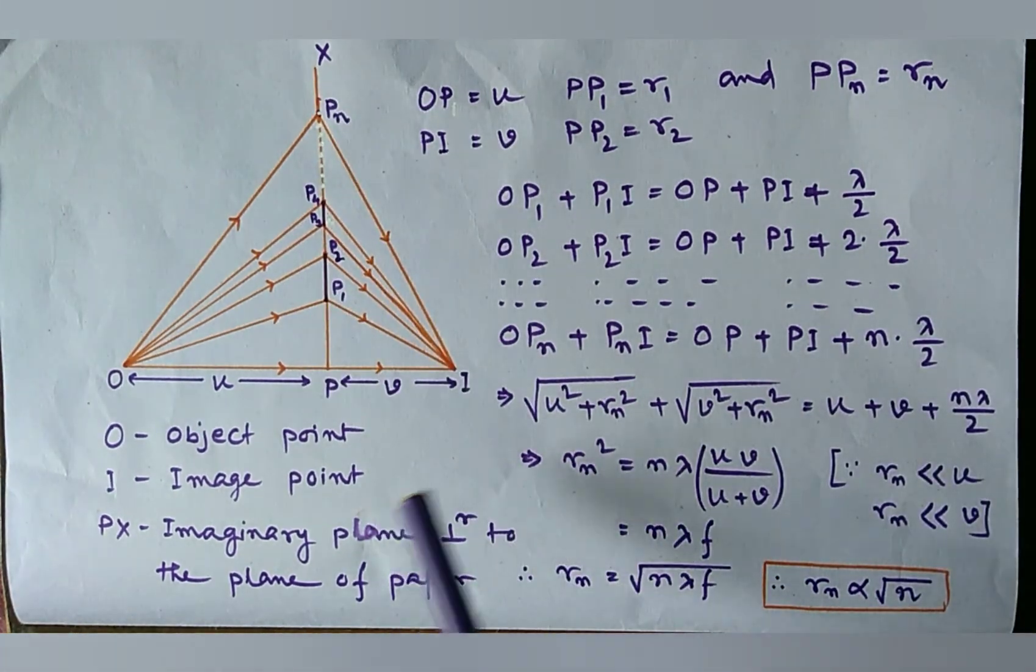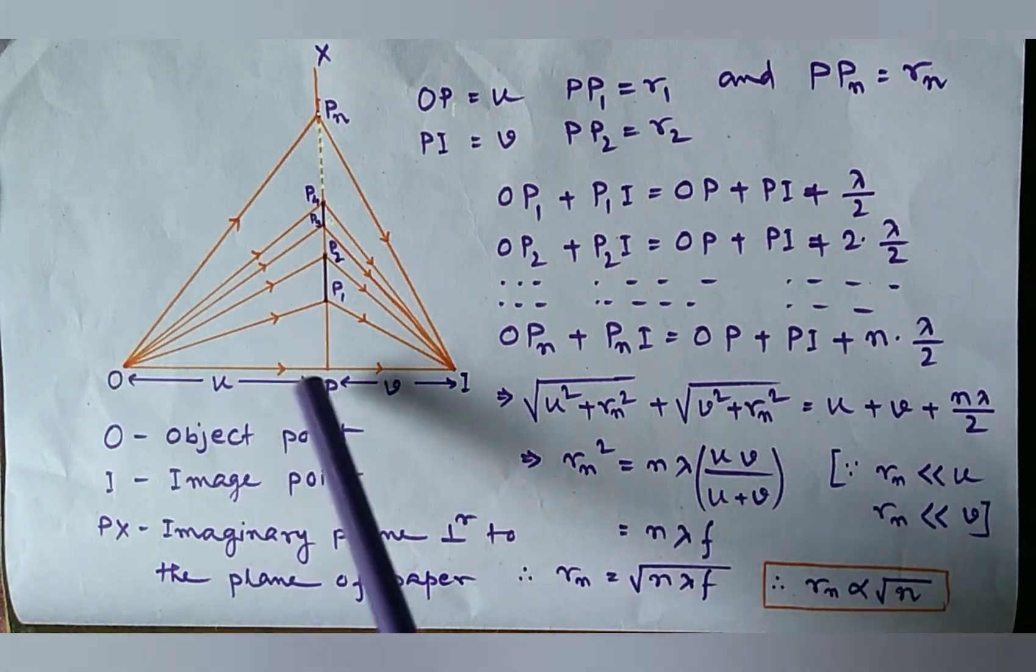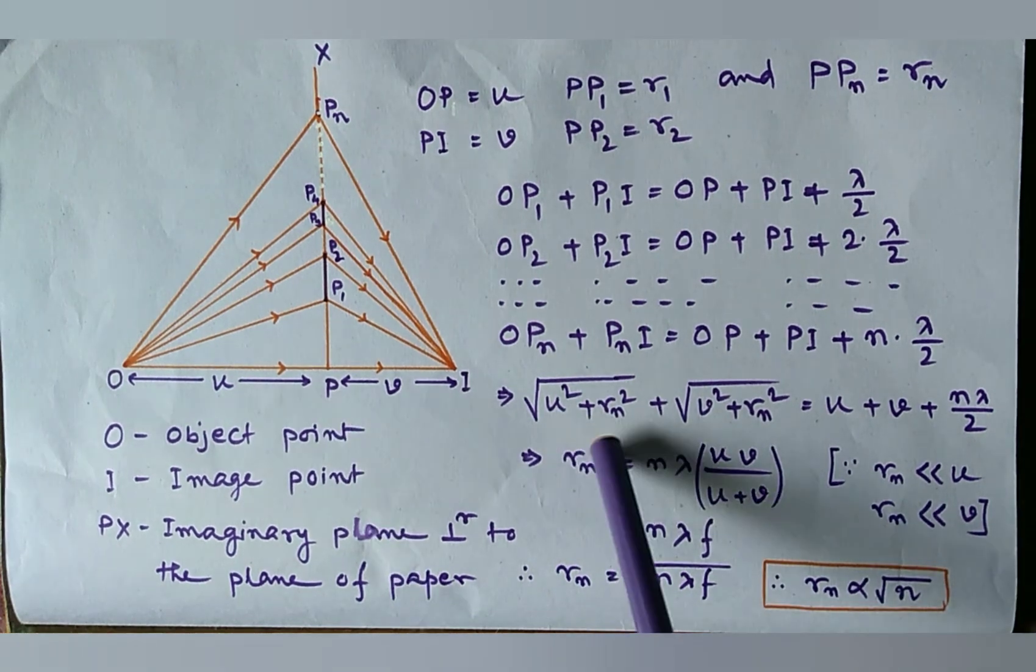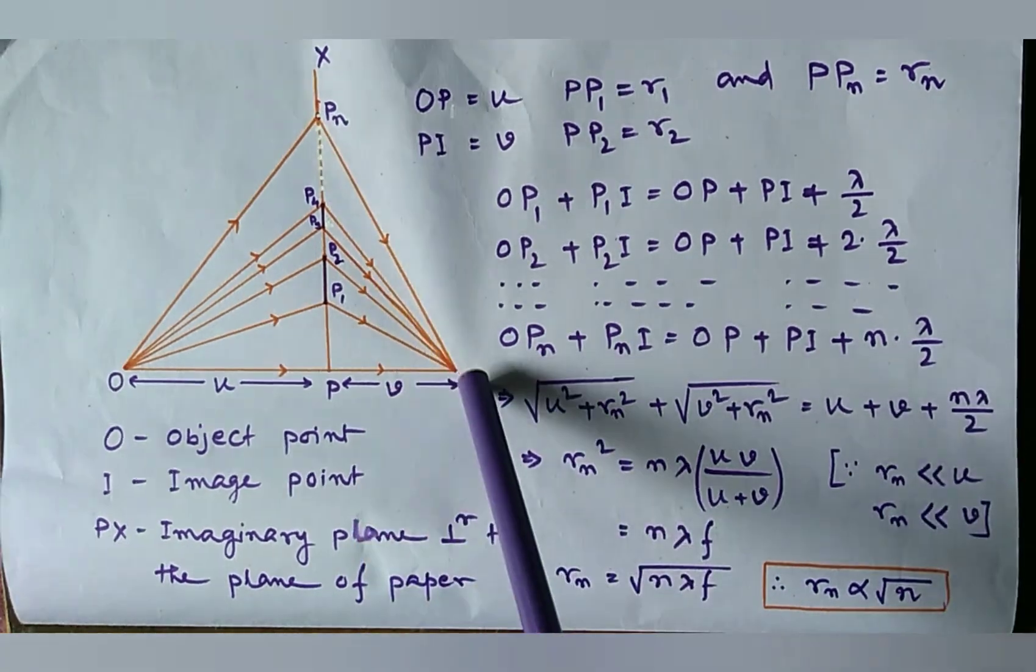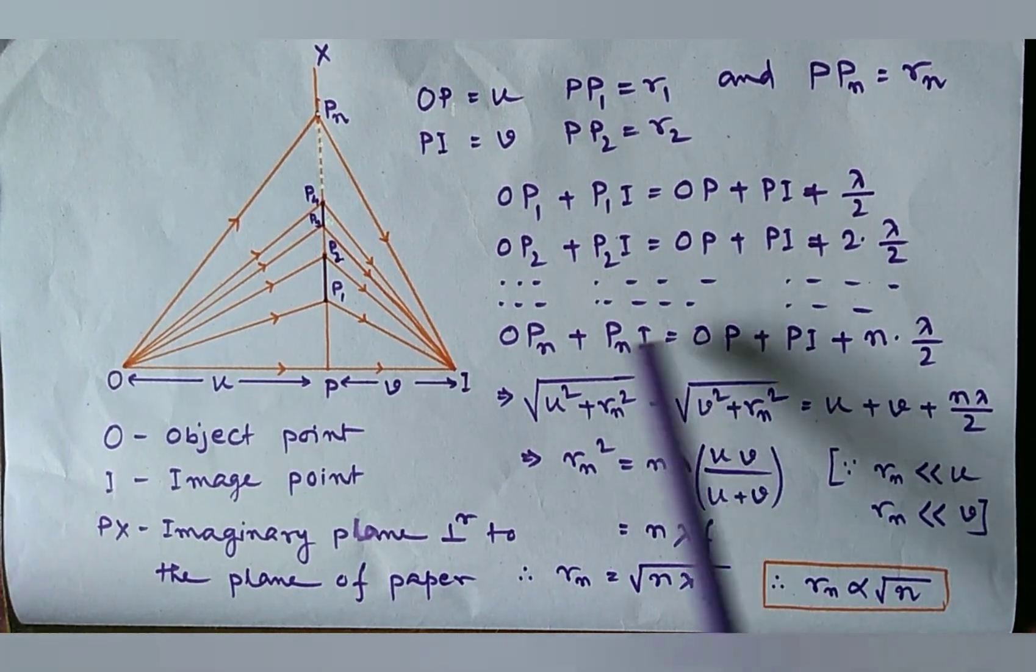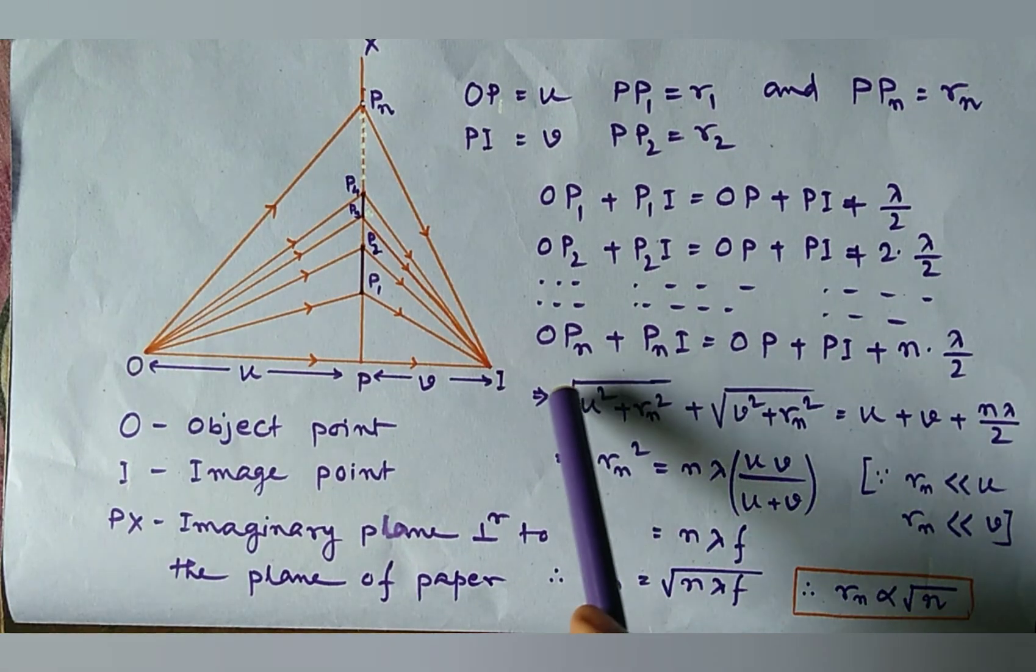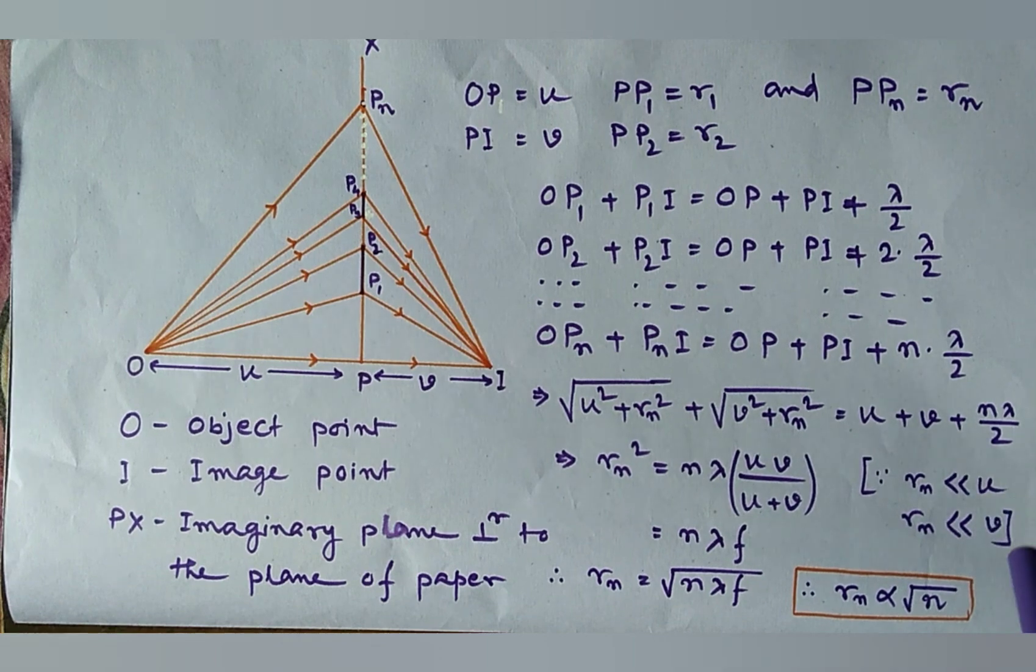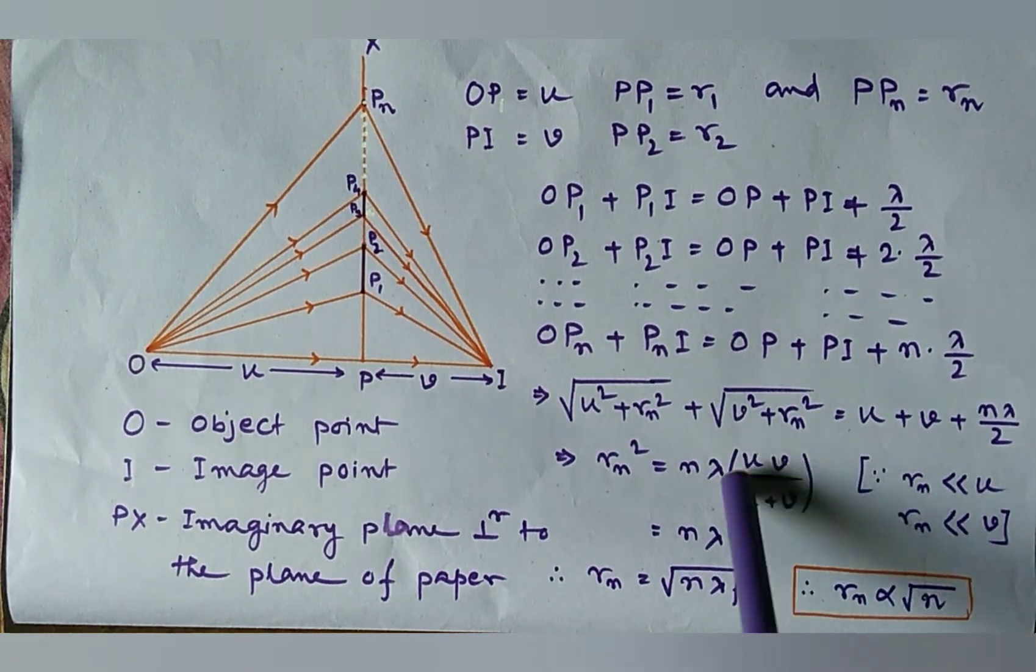Now from Pythagoras theorem OPn equal to root over OP square plus PPn square and PnI equal to root over V square plus Rn square equal to U plus V plus this. If we simplify this equation by taking Rn much smaller than U and V then we get Rn square equal to N lambda UV by U plus V.